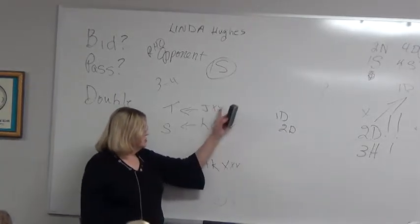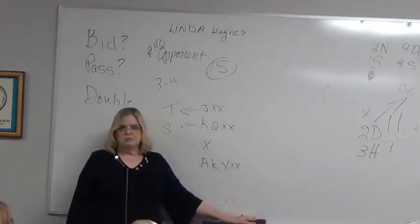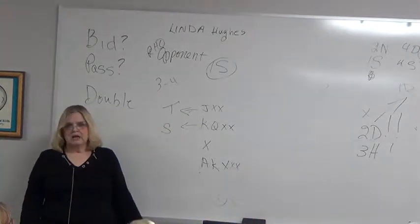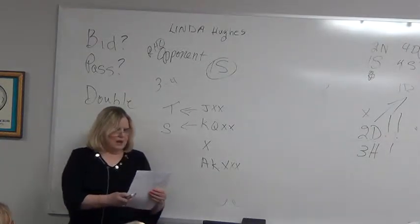But I definitely cannot bid two hearts over my partner's one spade. I definitely cannot bid one diamond. That's kind of why I like doubling with this hand. I mean, bidding two clubs with this hand, because it avoids those three bid problems down the road. If partner changes suits, I've got support, don't I? We're going to talk about that in a little bit.